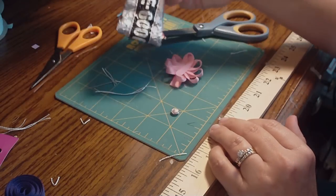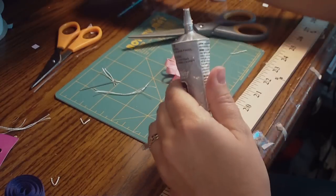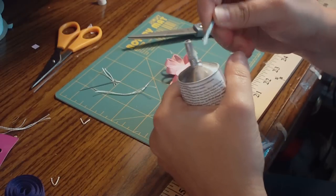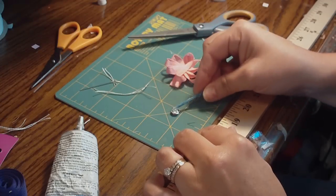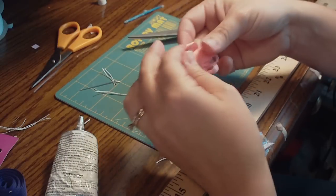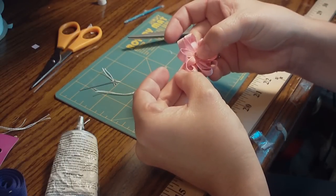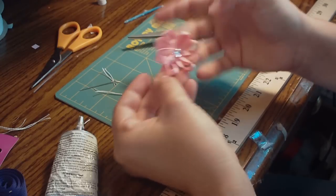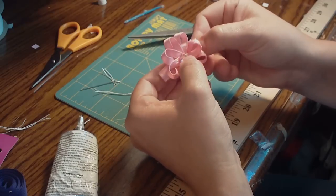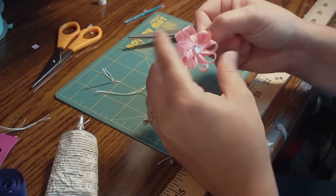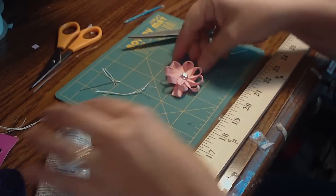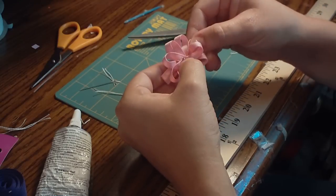And then to attach the rhinestone, I use E6000, which is a really good, strong glue. It's kind of hard to work with. So I just use a toothpick, put a little drop, put it on the rhinestone. Sometimes it doesn't like to come off. You can use a little bit just to make sure that that rhinestone is good and secure.